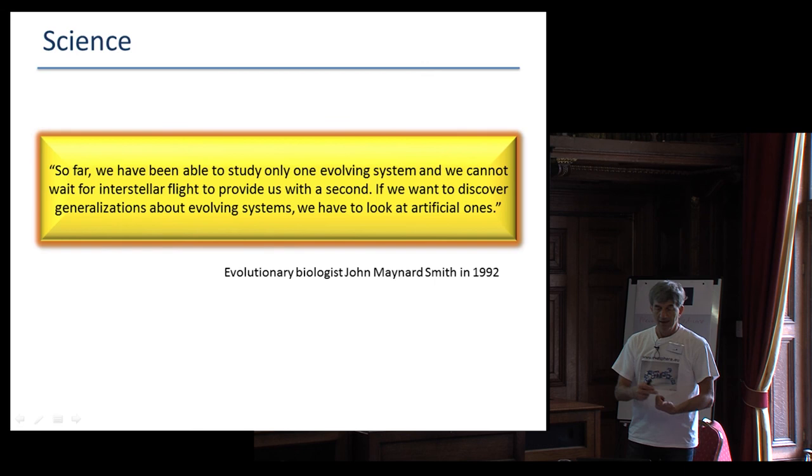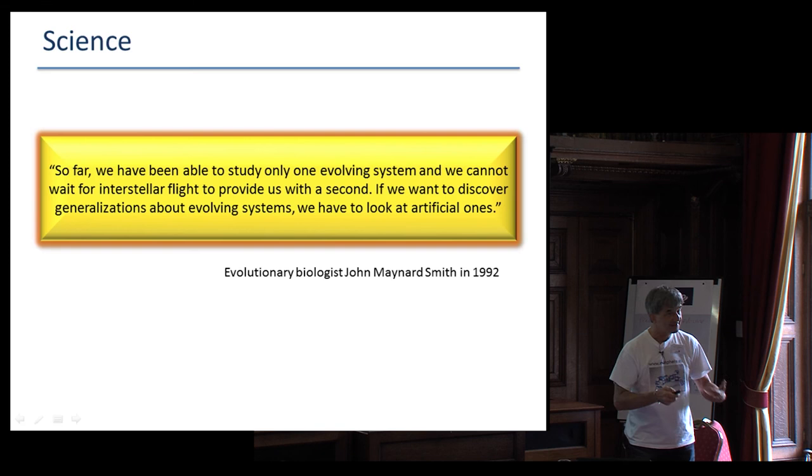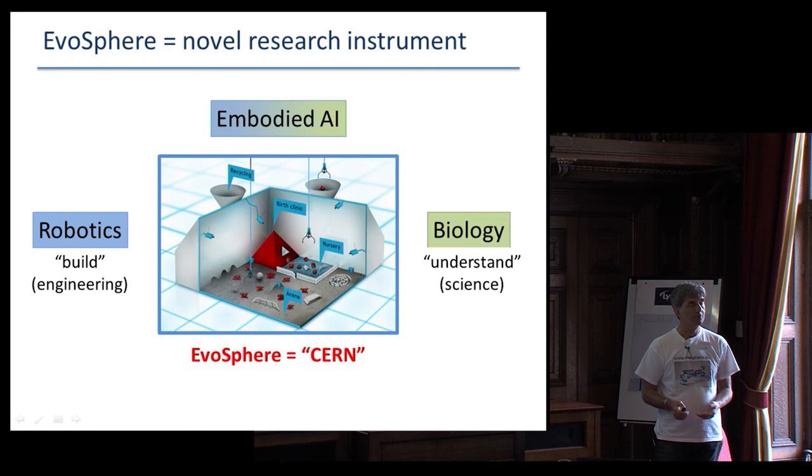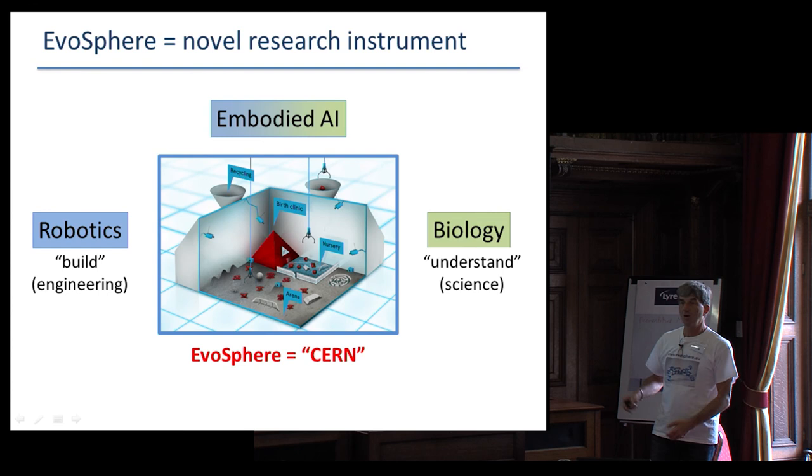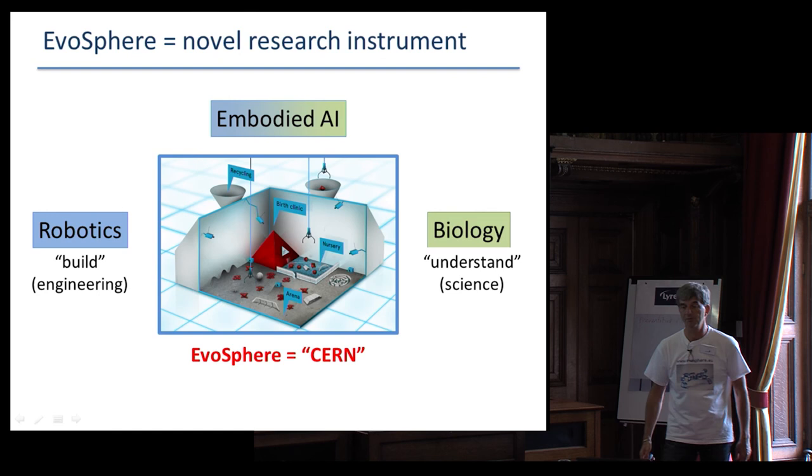As for science, let me quote an evolutionary biologist whom you all know, I guess. John Maynard Smith said, so far we have been able to study only one evolving system and we cannot wait for interstellar flight to provide us with a second. If you want to discover generalizations about evolving systems, we have to look at artificial ones. So by this technology, we create a new research instrument. If you want to study the stars, you build a telescope. If you want to study particles, you build a cyclotron. If you want to study evolution, you build an evosphere. And it has two sides to the story. So it will be for the practical side, the roboticist who just want to build something that works. It will be a very good engineering tool. For the scientists who want to understand how real life works, it will be a tool of study.